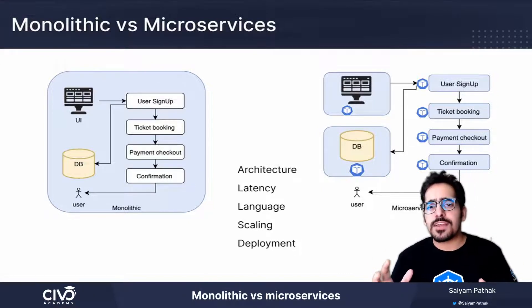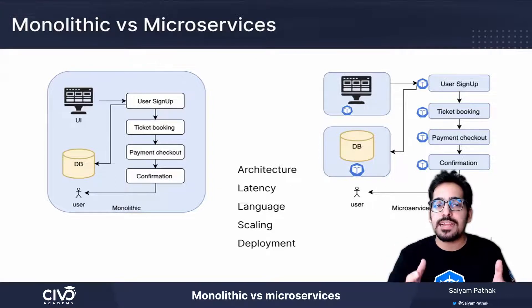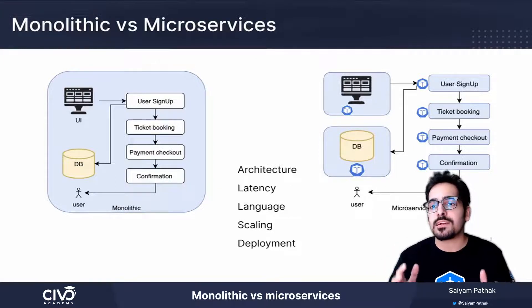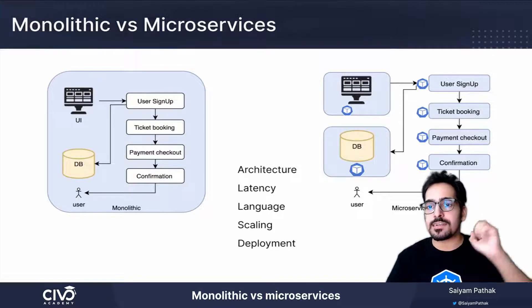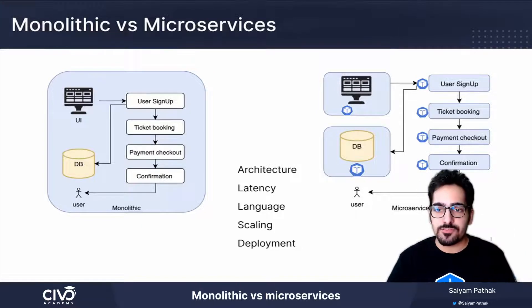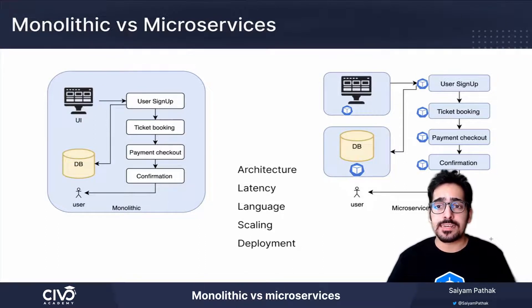Talking about language flexibility, for a monolithic application you have to write the code in a single programming language — all of the coding pieces are written in a single programming language. Whereas in microservices, you get the flexibility to code each of the components in a different language.